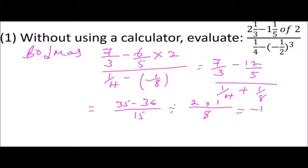This will give you 35 minus 36, which is -1, divided by 15. Then you divide by 2 plus 1—that's 3—divided by 8.